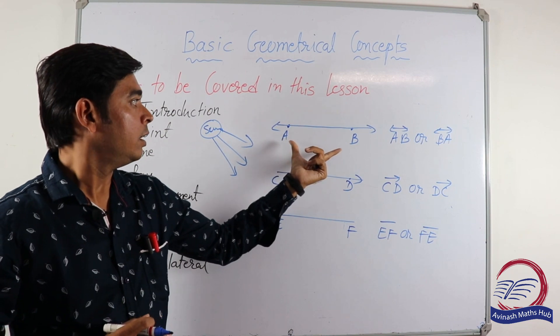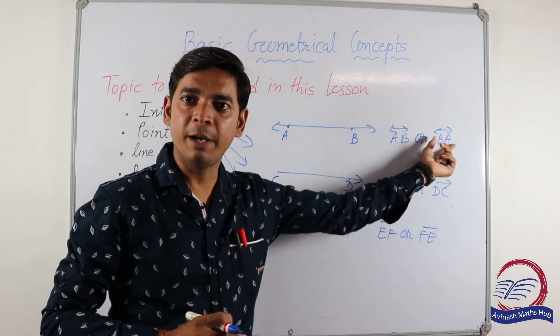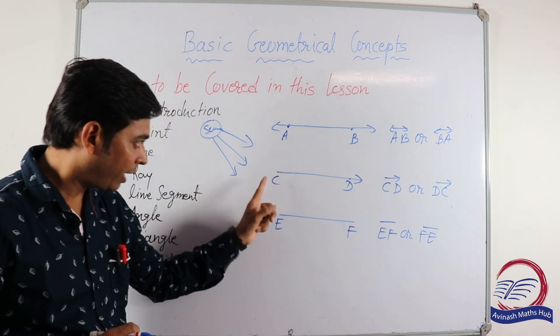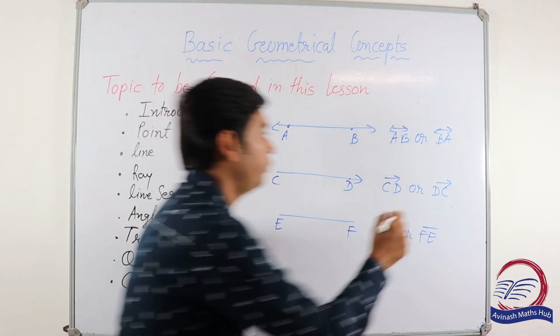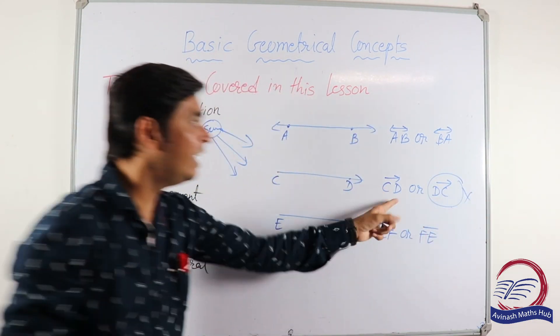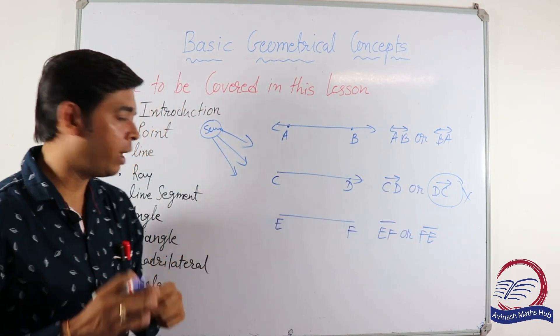Line AB can also be written as line BA. Ray CD cannot be written as ray DC. We cannot write ray CD as ray DC. Why?